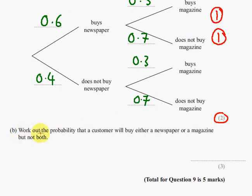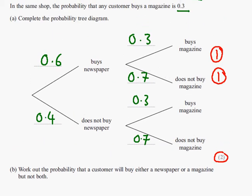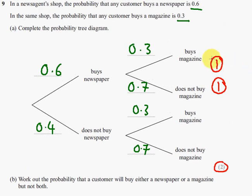Part B says work out the probability that a customer will either buy a newspaper or magazine, but not both. So, let's have a look at our probability tree. To find the probability of the guy buying a newspaper and a magazine, we would multiply across the tree. So, to find the probability that he buys a newspaper and a magazine, we'll do 0.6 times 0.3.